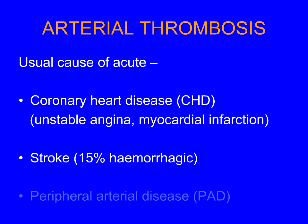15% of strokes, however, are hemorrhagic rather than thrombotic. And peripheral arterial disease, acute peripheral arterial disease, critical limb ischemia, where the limb becomes white and painful, that is almost always an arterial thromboembolic event.